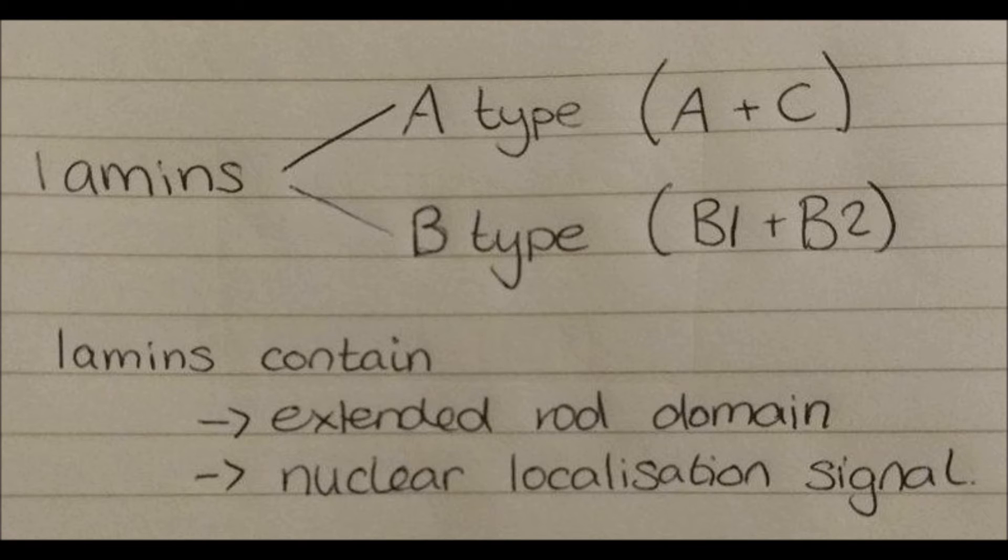And the next question is, which of the following types of intermediate filaments is closely associated with the nucleus, with the options being types 1, 2, 3, 4 or 5? The answer is type 5.